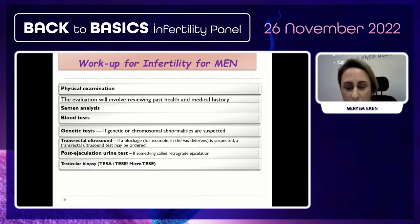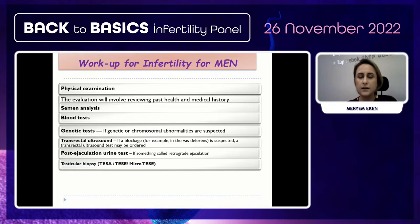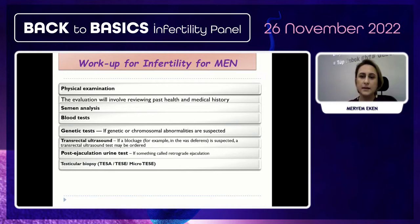For male evaluation, we must work up infertility through physical examination of both partners and a review of past health and medical history. This includes semen analysis, blood tests, hormone profile, genetic testing if chromosomal abnormalities are suspected, sometimes transrectal ultrasonography, post-ejaculatory urine testing for retrograde ejaculation, and if azoospermia is found on semen analysis, referral to an andrologist for testicular biopsy.